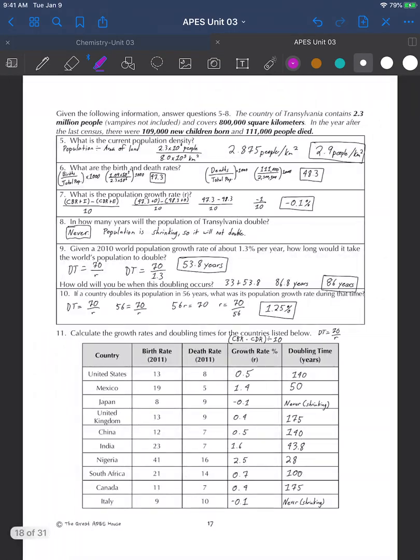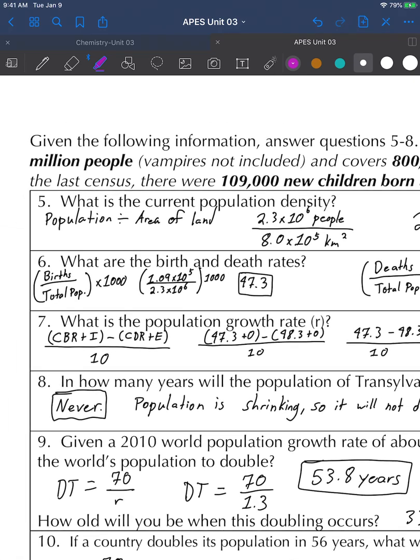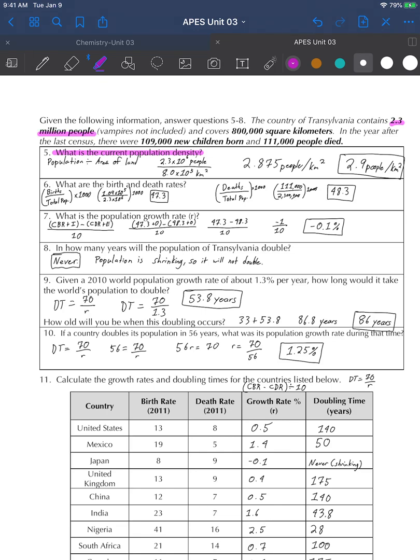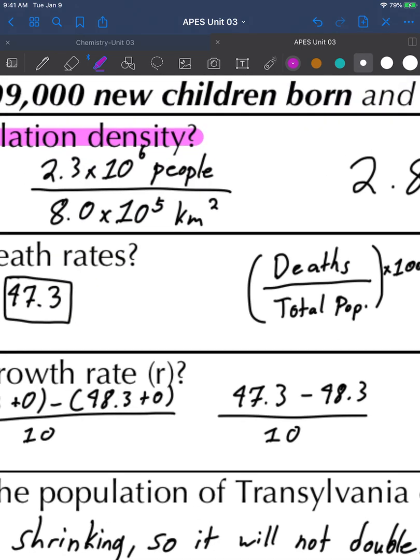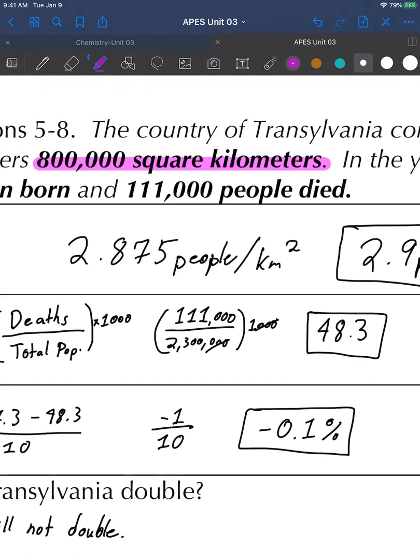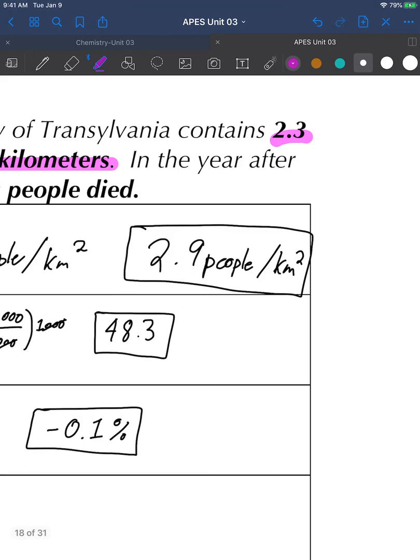Next page, we have another scenario. What is the current population density? Population density is people per area of land. Our population is 2.3 million people and our land is 800,000 square kilometers. We get 2.875 people per square kilometer, and I decided to round to one decimal point, 2.9 people per square kilometer. On your exam, College Board gives you a plus or minus 2% margin of error for math problems.